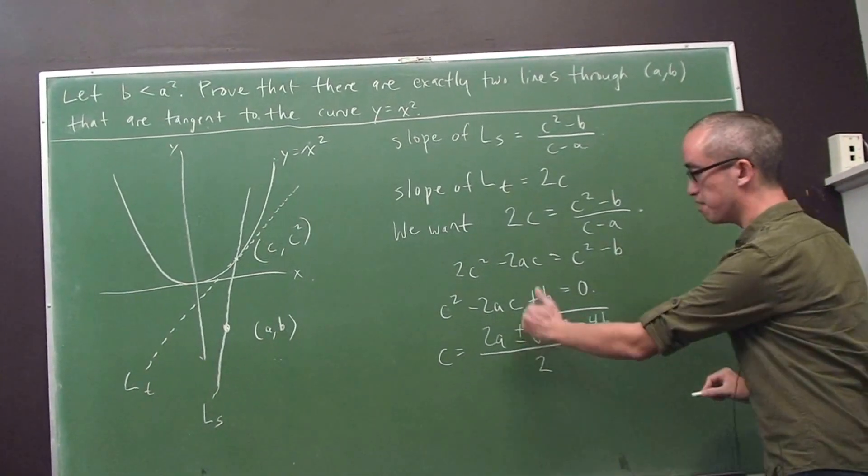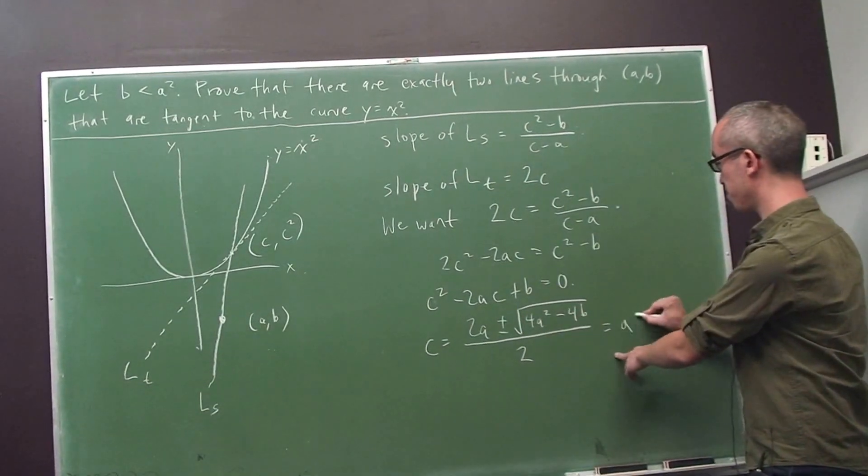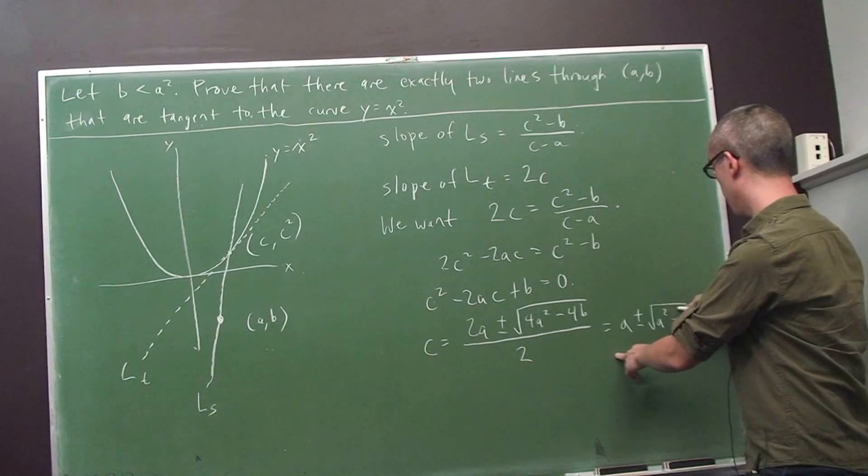So if you pull the 4 out of here, you can cancel the 2s here, here, and the 4s there and there, and we'll end up with a plus or minus √(a² minus b).